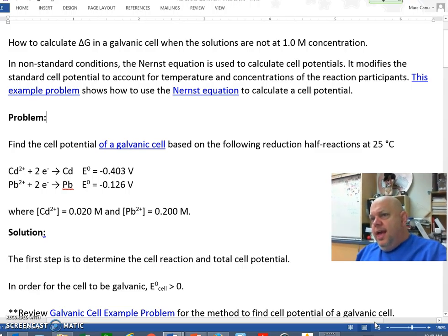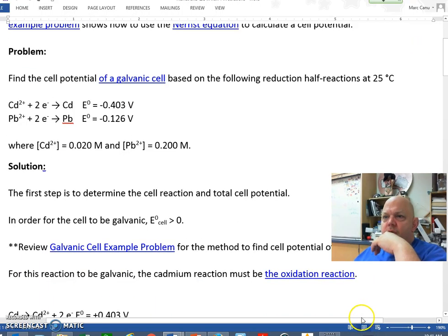Now the question is, how do you calculate the delta G in a galvanic cell when the solutions are not at 1.0 M concentration? We know the original formula of delta G equals negative N F times delta E of the cell, which is great if your molar concentrations are one on both sides.